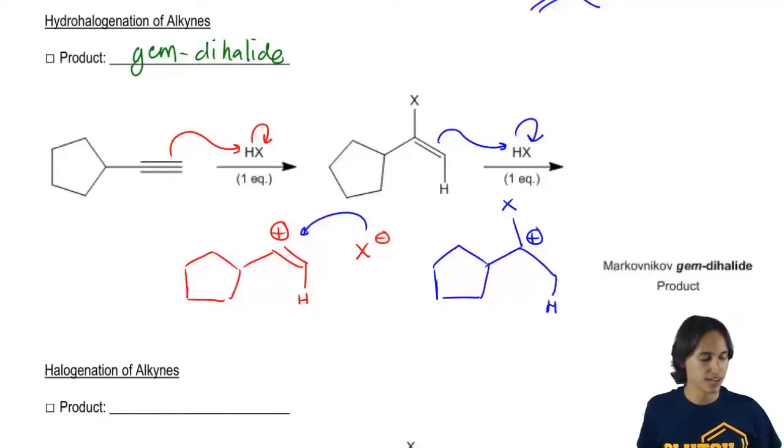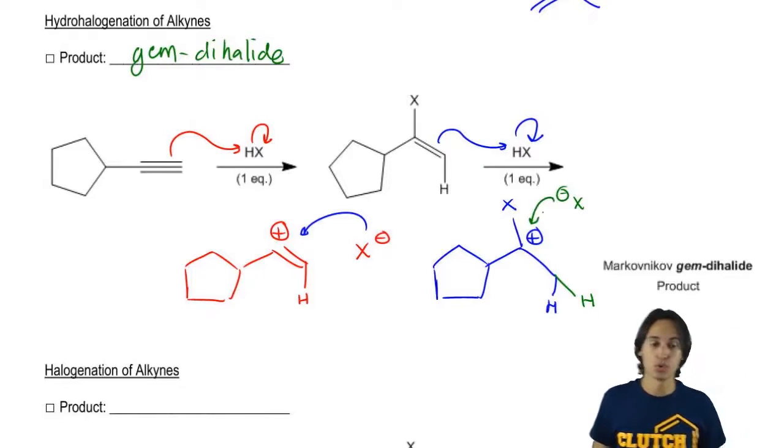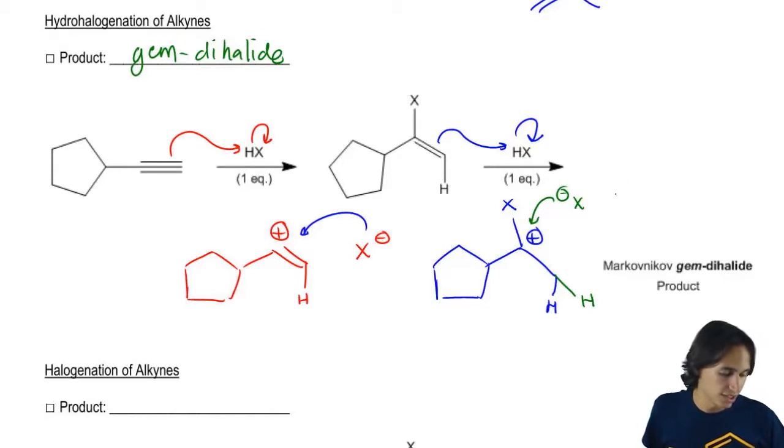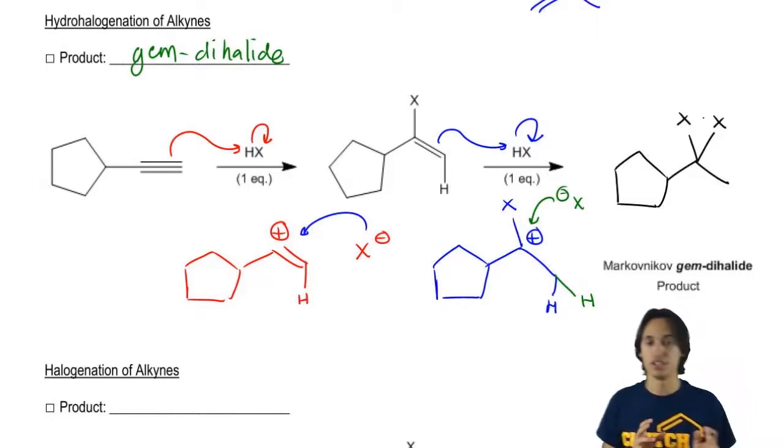And once again, I would get my X – and now by the way, there's two H's there – and now my X would attack there again. So what I would wind up getting is a product that looks like this, where I have a five-membered ring with two X's in the Markovnikov position.